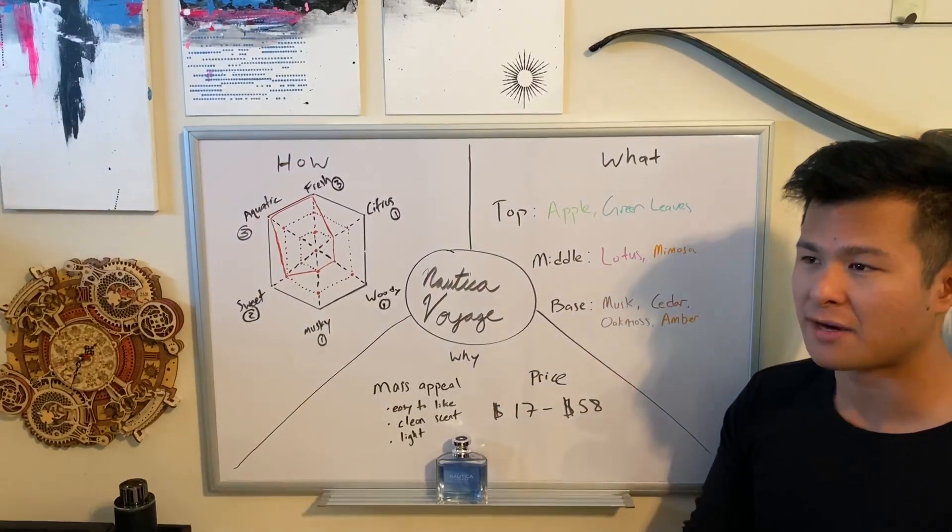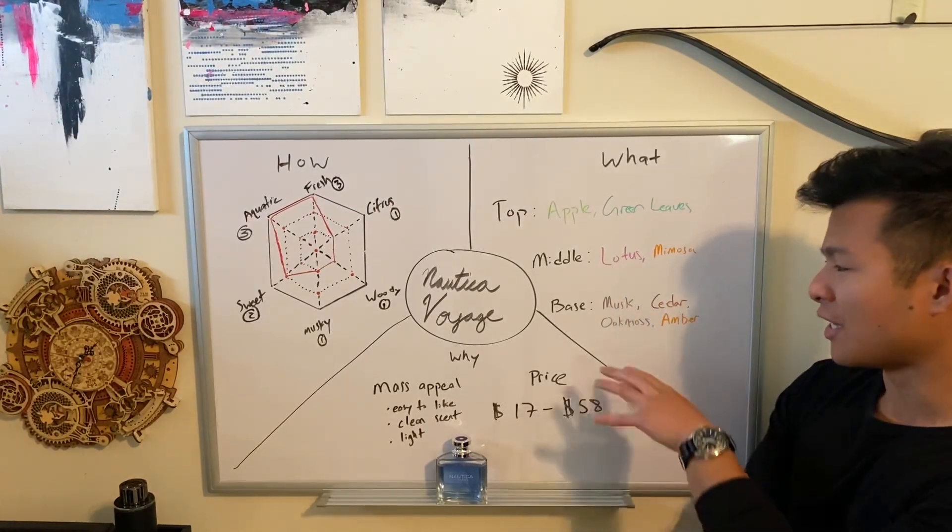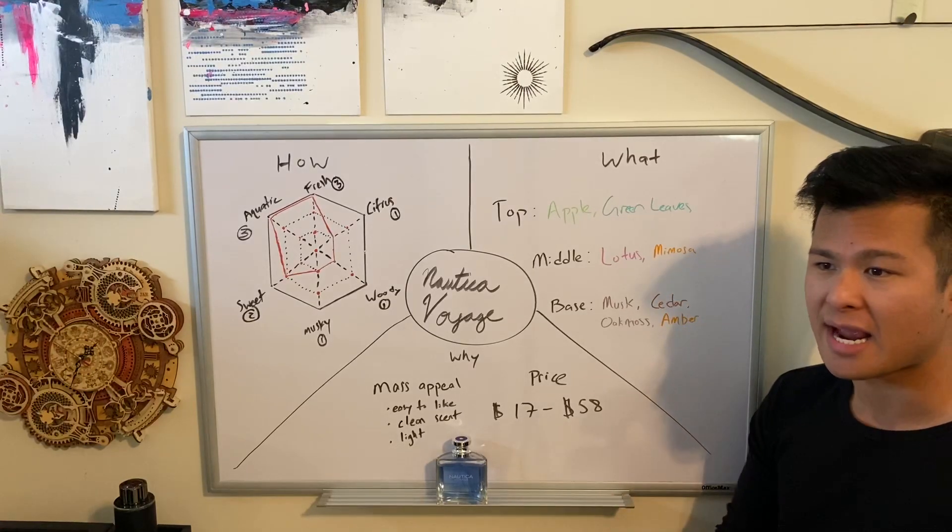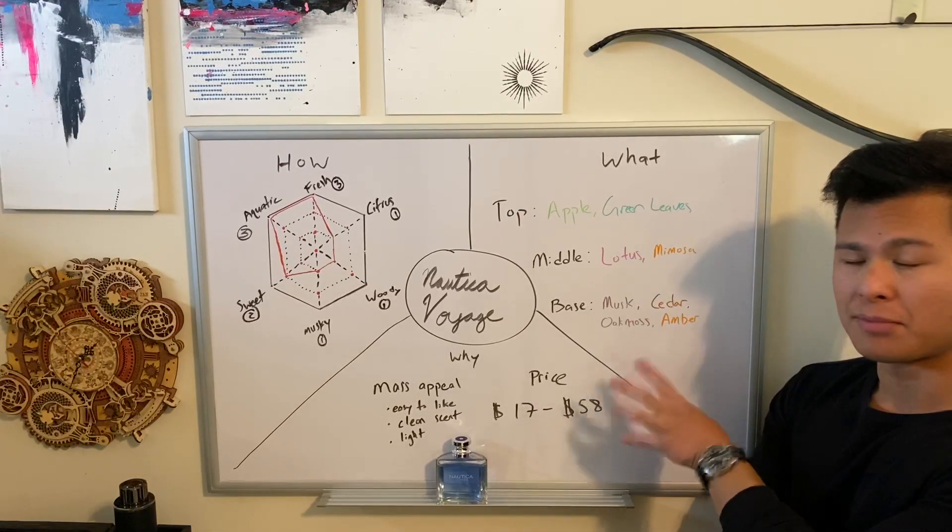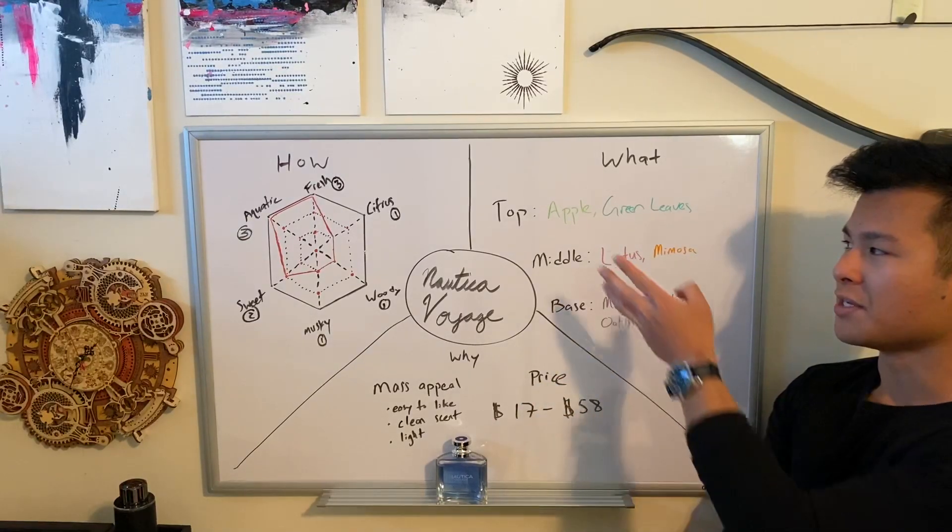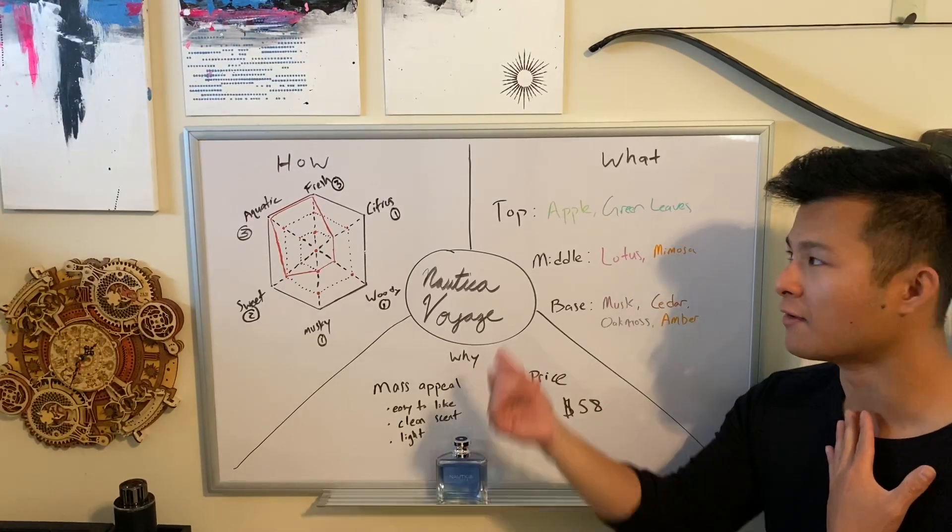you're gonna get more floral notes out of the fragrance and to be honest they overpower the base notes, the musk, the cedar, oak moss, and amber. You're getting some complexity and backbone to this fragrance with the base notes, though these four really shine throughout the longevity of the product.